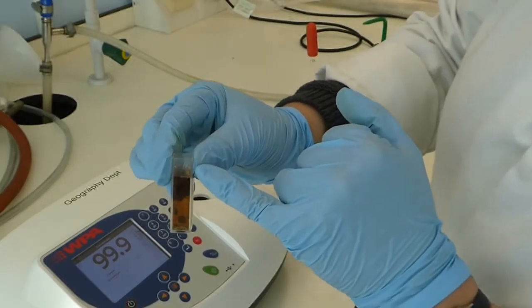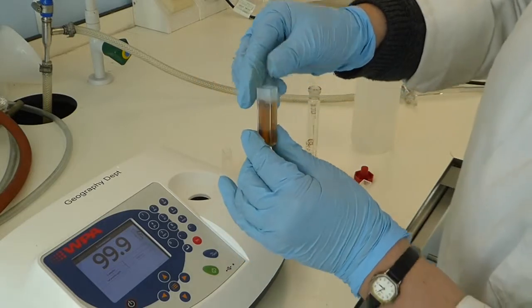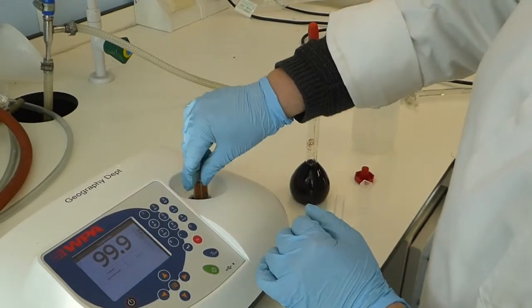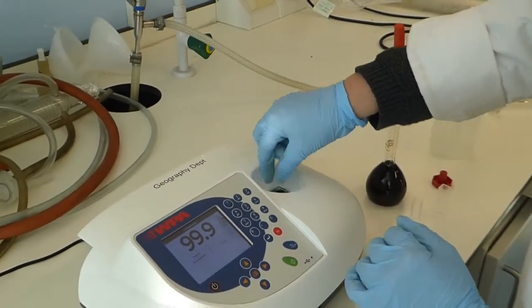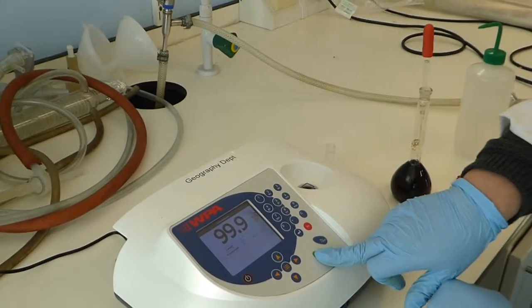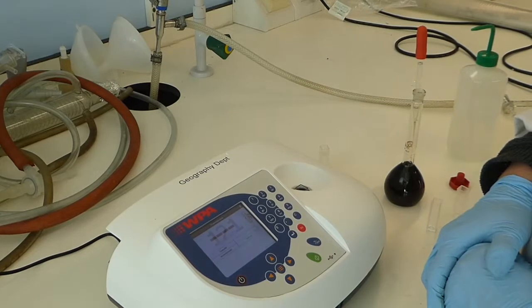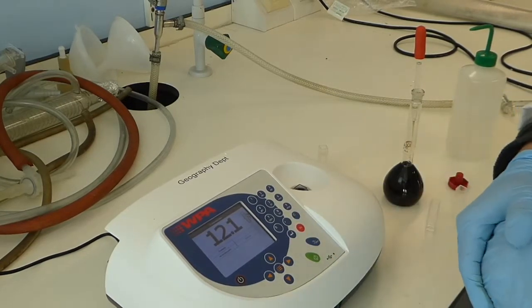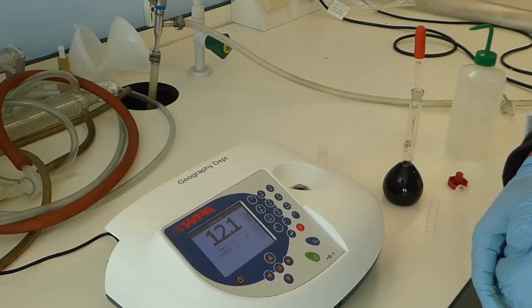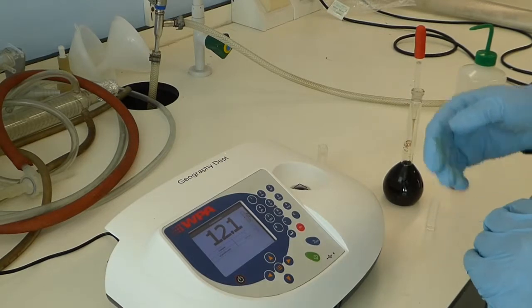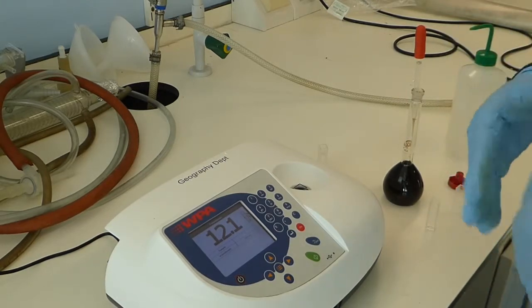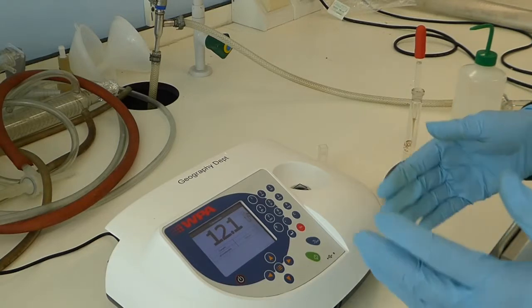And then you want to line up the arrows again. Turn that round, place it in, and then for running a sample you press the green button. That will give you a value in percent transmittance. This is reading 12.1%. You then want to do that three times for your sample using new cuvettes each time.